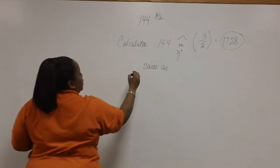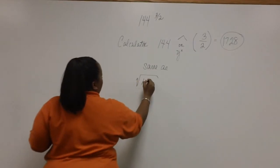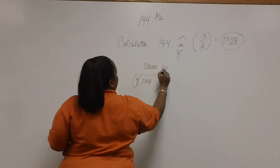So this two means that we're dealing with square root of 144, and all of this is raised to an exponent of three.